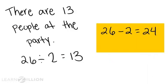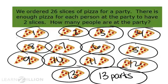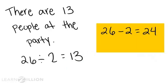So, now we know that there are 13 people at the party. I did 26 divided by 2 is equal to 13. If we look back at our picture, we can see that even though we grouped these pieces into groups of two, our total group did not change. Just like in our division problem, we still have 26 as our total group. 13 groups of two is equal to 26.